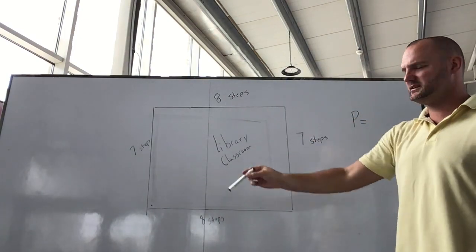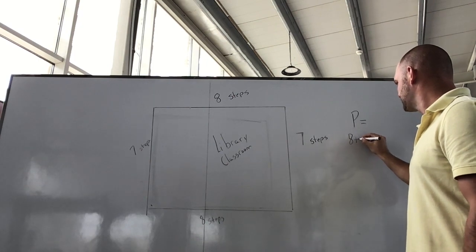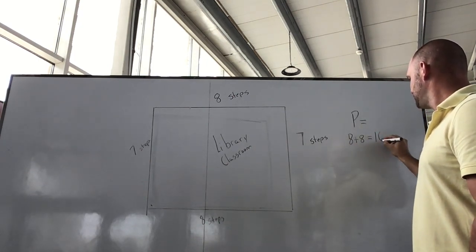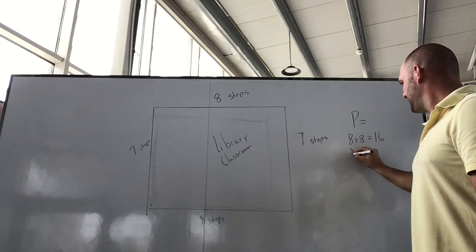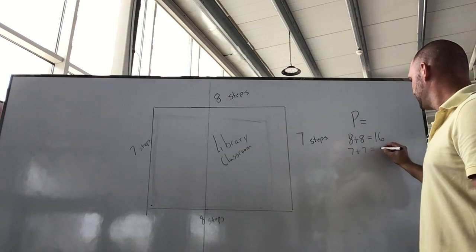So all these added together. So if we take eight plus eight, we know that equals 16, and if we plus seven plus seven, we know that equals 14.